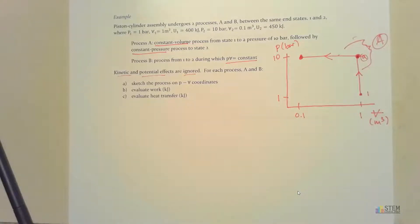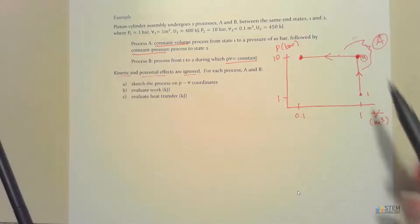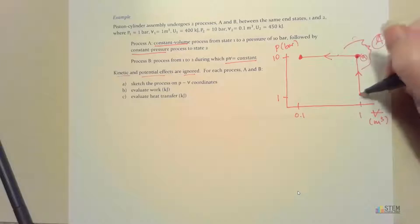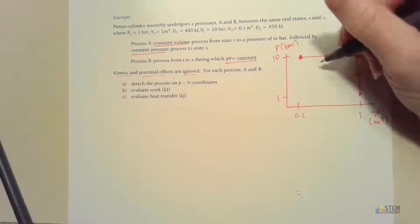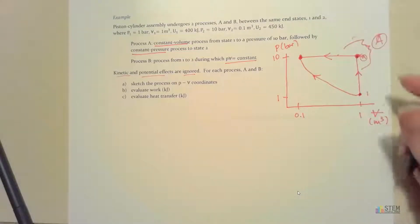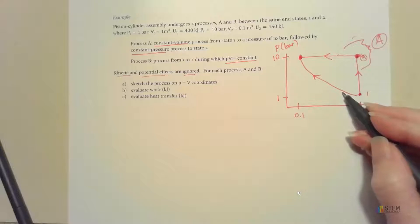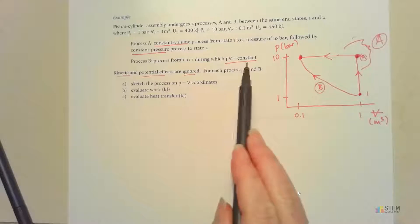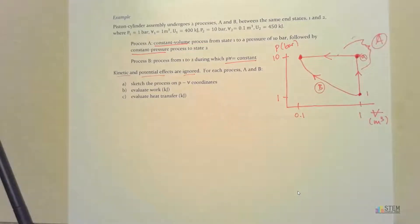For Process B, we have the PV equals constant relationship. We already have states 1 and 2 plotted, so we connect them with a curve determined by the PV equals constant condition — that's what Process B looks like on the PV diagram.